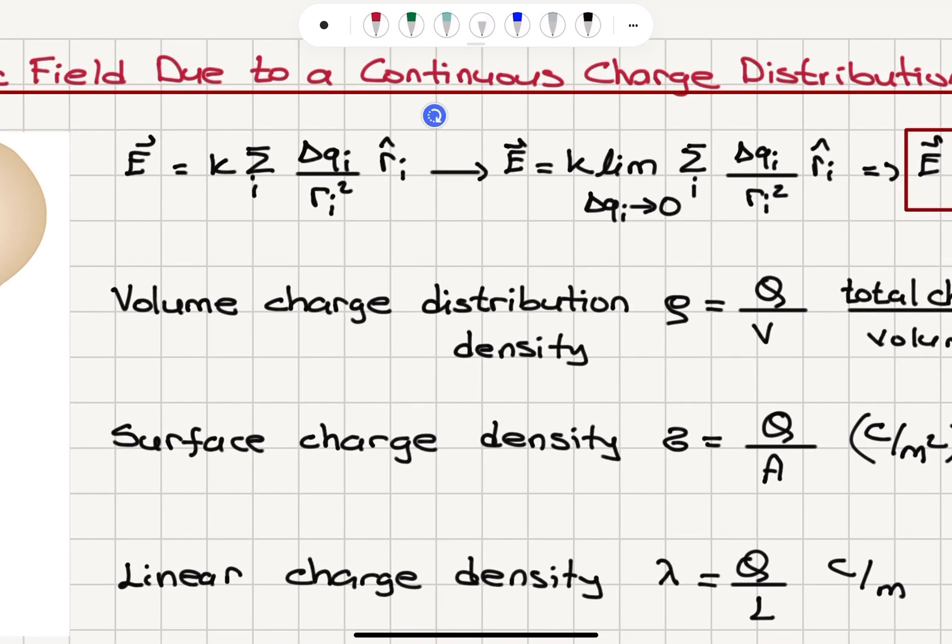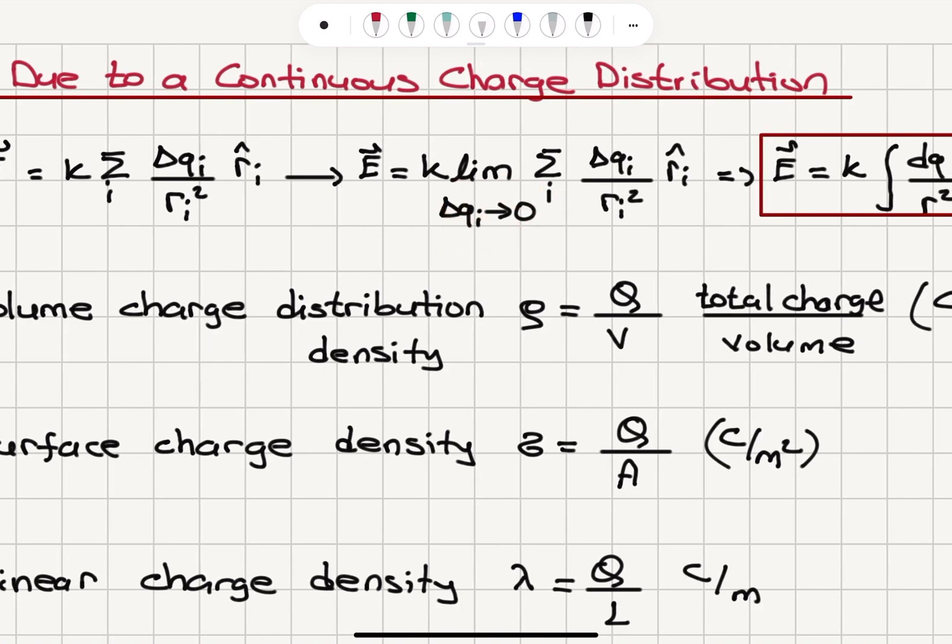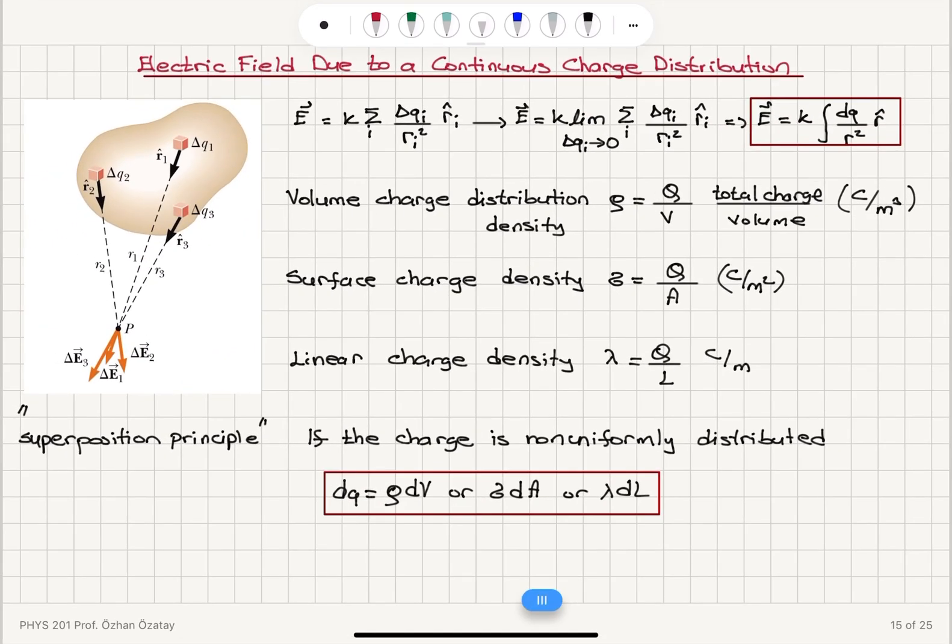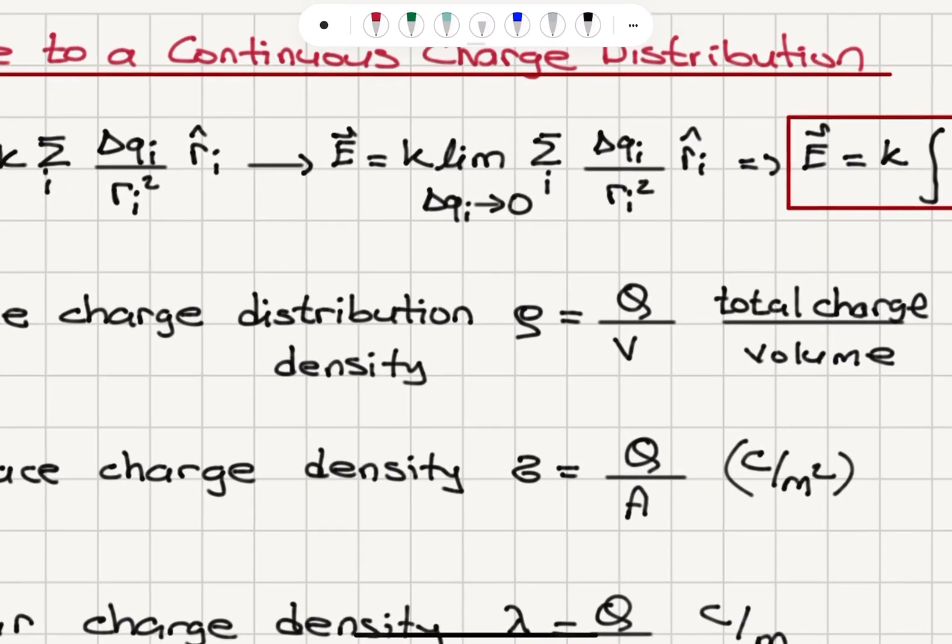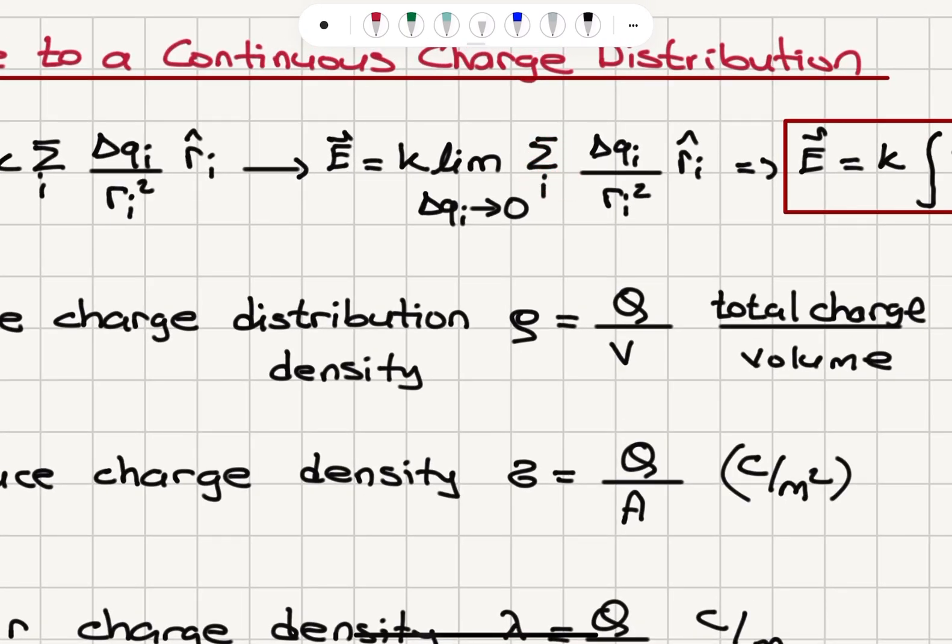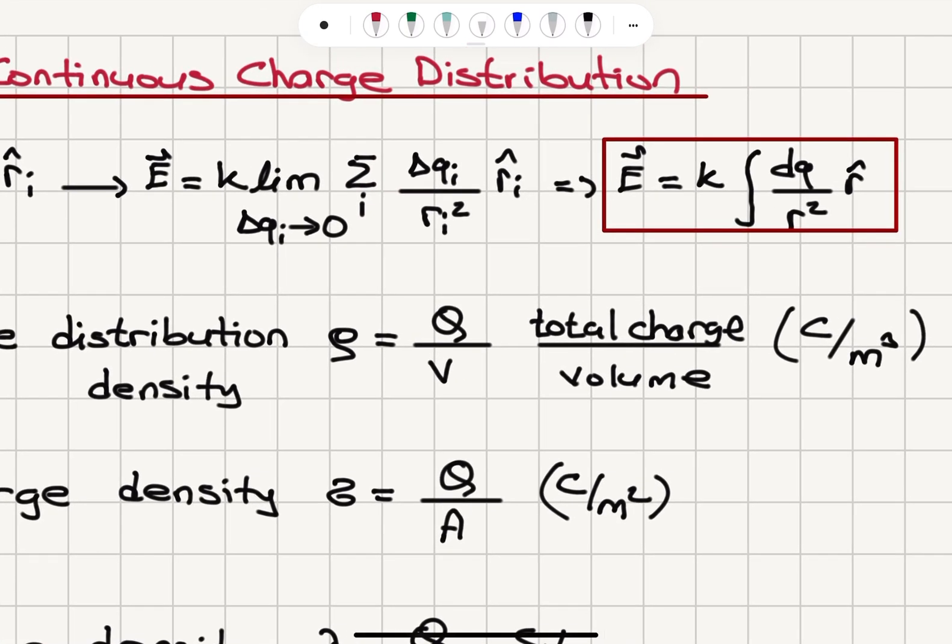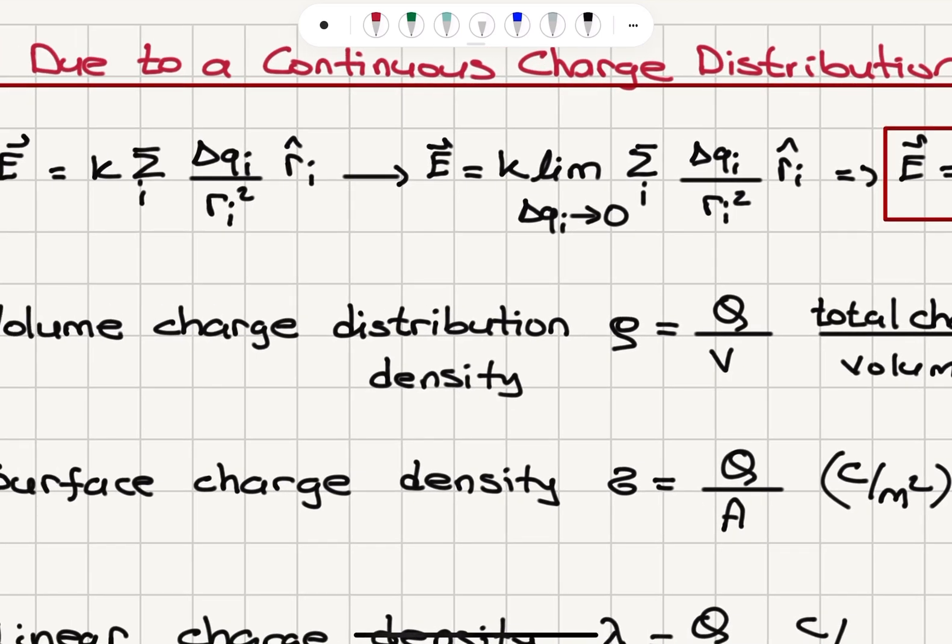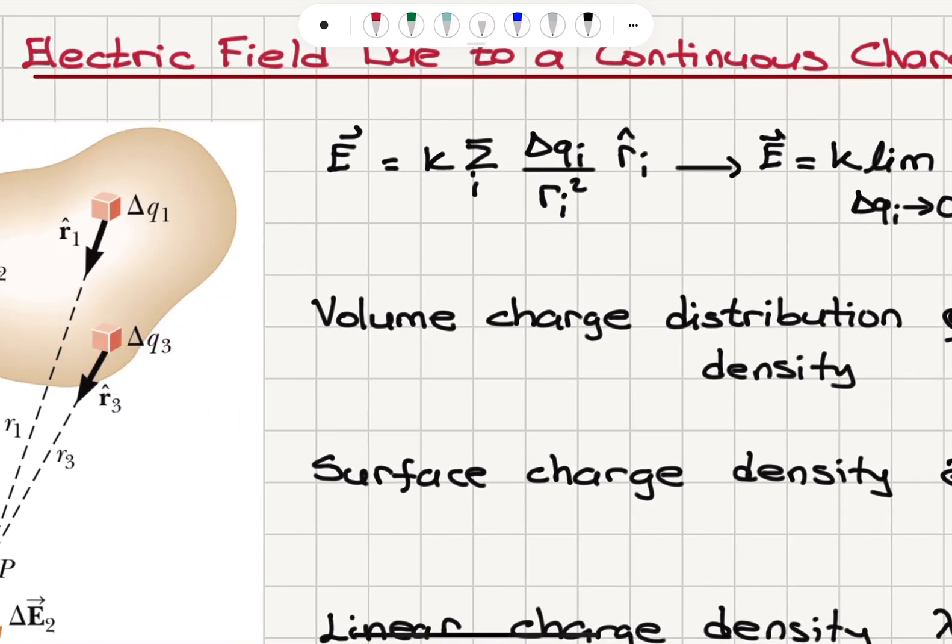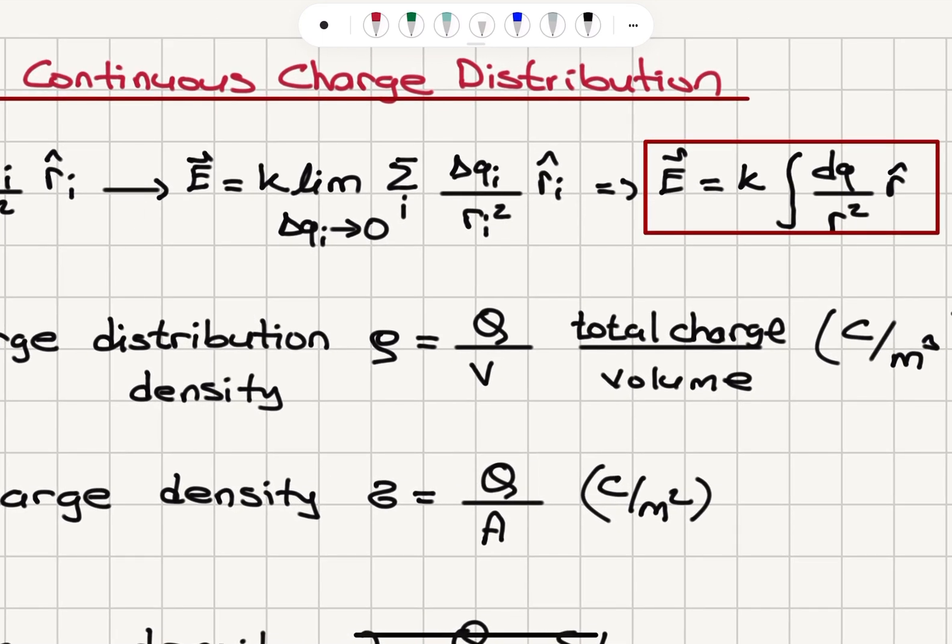So if I add these contributions in the limit that delta QI goes to zero, so that means I take a very small charge element here, this summation will converge to an integral, so it will be replaced by K integral over the volume of the charge distribution,